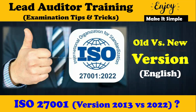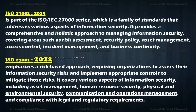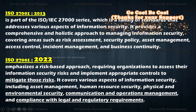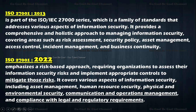Let's look at the differences between the 2013 version and the 2022 version. ISO 27001 2013 is part of the ISO/IEC 27000 family of standards, which addresses various aspects of information security. It provides a comprehensive and holistic approach covering areas such as risk assessment, security policy, asset management, access control, incident management, and business continuity.